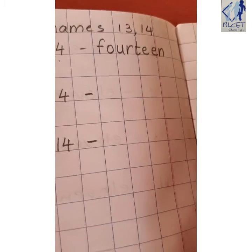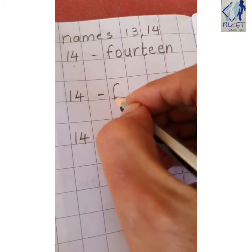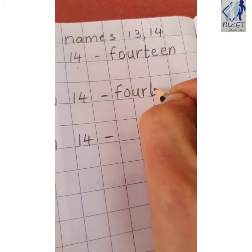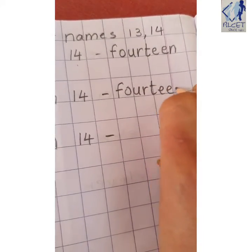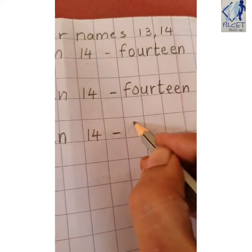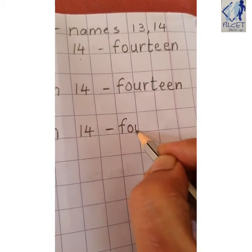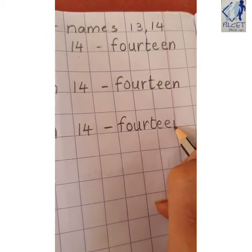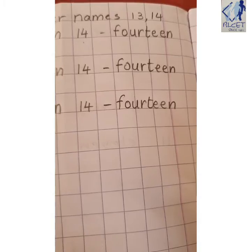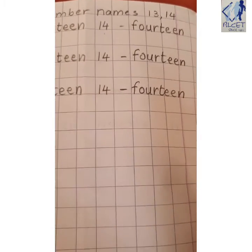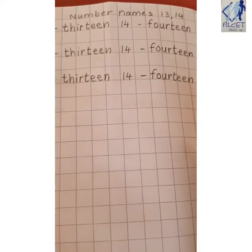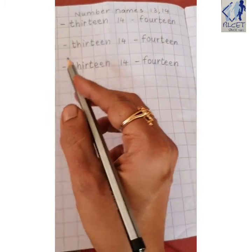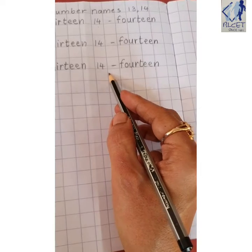14. F-O-U-R-T-E-E-N. 14. Okay. 14. F-O-U-R-T-E-E-N. 14. So, this is the way we have to write the number names of 13 and the number name of 14.